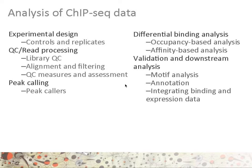Is a locus in one treatment more enriched than another locus? Different types of analysis could be, for example, validation and downstream analysis, where one would like to know what is the motif of a transcription factor of interest. One could also want to figure out and annotate all the genes that are related to a given transcription factor, and one could also think about integrating binding information with other types of high-throughput sequencing data, such as expression data. If I have a binding event at a transcription factor's binding site, does that result in increased expression?